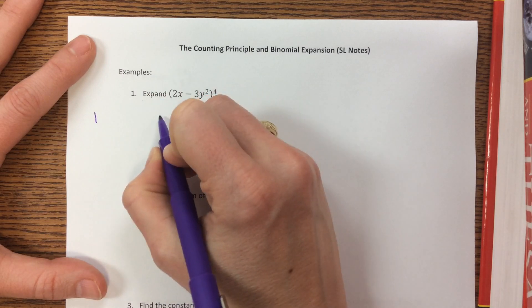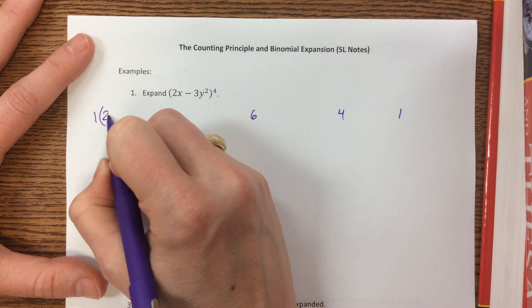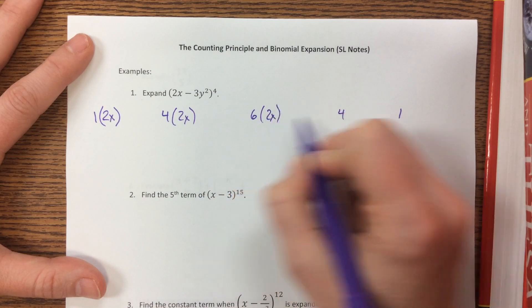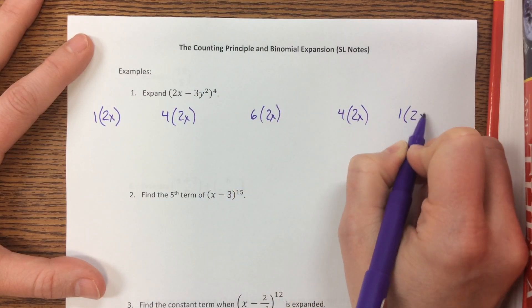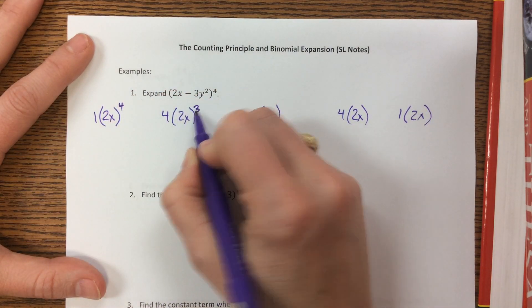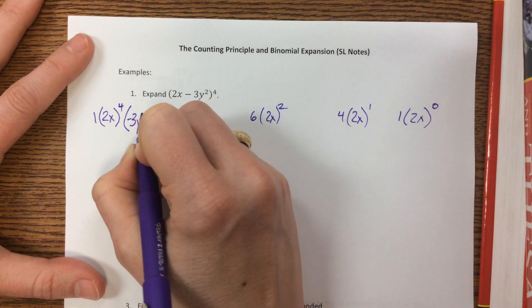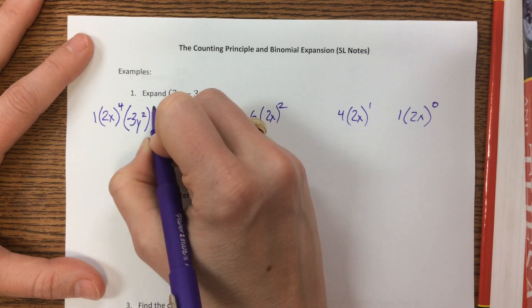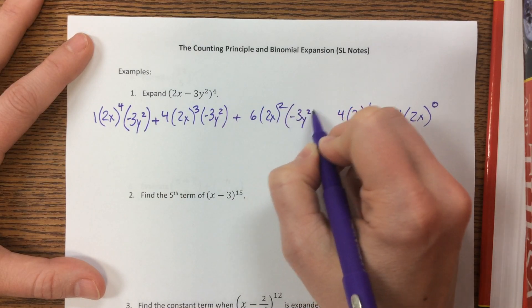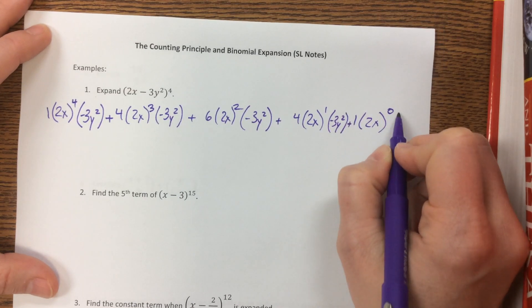And my coefficients are 1, 4, 6, 4, 1. And then I'm going to come through here and I have 2x for each of those terms. Sorry, I didn't save myself quite enough space, but pretty close.